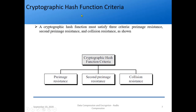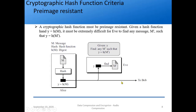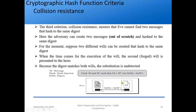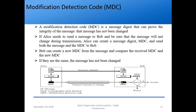We studied some criteria for cryptographic hash functions: pre-image resistance, second pre-image resistance, and collision resistance. Then we studied a very important concept called Modification Detection Code — MDC. Note it is not 'message detection code' — it is modification detection code. MDC is a code that can prove the integrity of the message, that the message has not been changed.